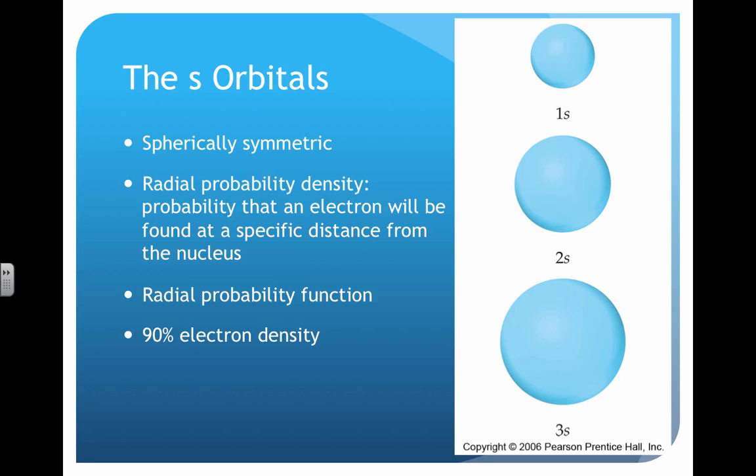These circles represent the 90% probability of finding electrons within the borders of these spheres. 1s is the sphere closest to the nucleus when n equals 1. 1s is actually inside a 2s and then 2s is inside a 3s, so there's a lot of overlapping that goes on.